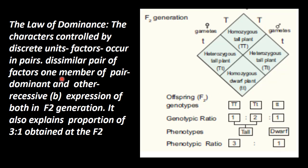So, out of these two factors, one is dominant and another is recessive. This is called the law of dominance. The characters are controlled by discrete units called factors, which occur in pairs. In dissimilar pairs of factors, one member is dominant and the other is recessive. Both are expressed in the F2 generation in a ratio of 3 is to 1. This is called the law of dominance. Thank you, students — we will meet again in the next discussion. Thank you.